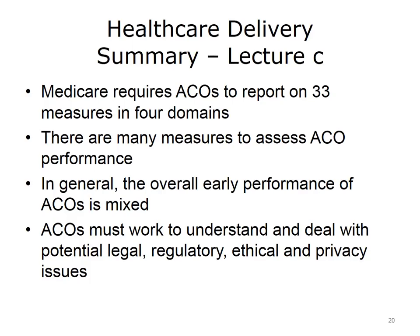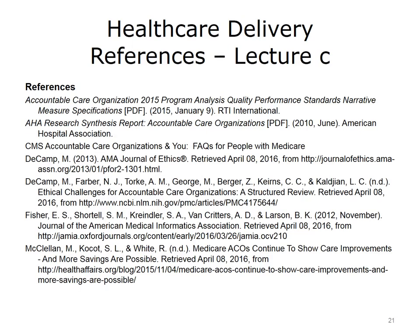This concludes Healthcare Delivery, Lecture C. In summary, CMS requires ACOs to report on 33 measures in four domains. In terms of assessing how ACOs have performed, there are many measures that can be used. In general, evaluations have found that the overall early performance of ACOs is mixed—many have achieved both the quality and cost savings desired, but some have not. As they develop further, ACOs must work to understand and deal with potential legal, regulatory, ethical, and privacy issues that will arise with this new model of care.